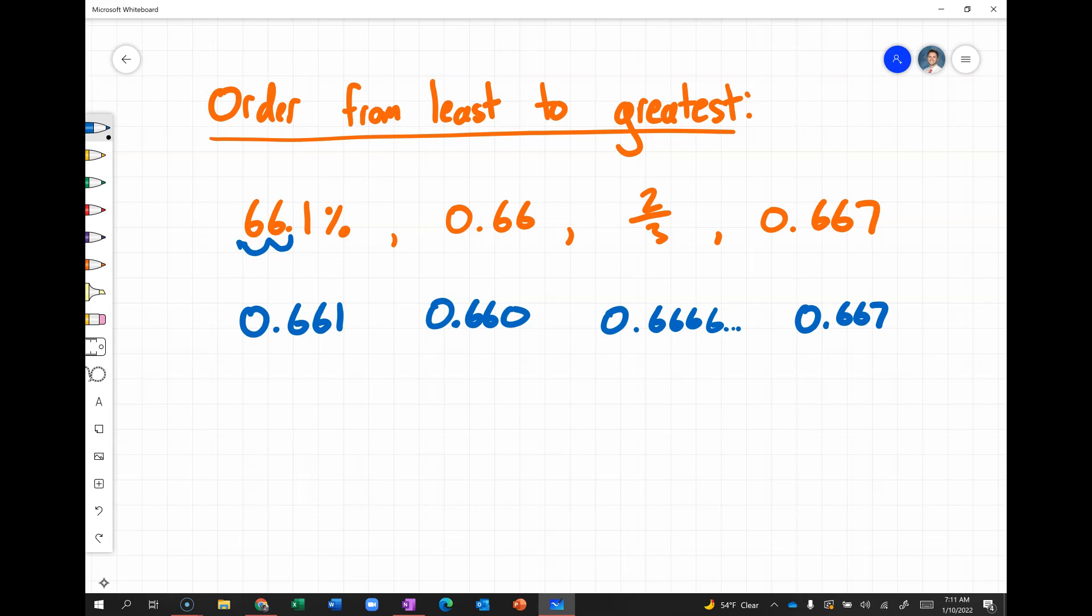So, to put these from least to greatest, we can see 0.660 is the least. So, that would be 0.66. Then, we have 0.661, so that would be 66.1%. And then, 0.6 repeating, you can see, is less than 0.667. So, that would be two-thirds. And then, finally, 0.667. So, that's just a quick look at fractions, decimals, and percents.